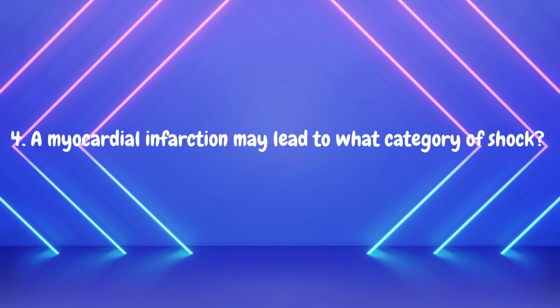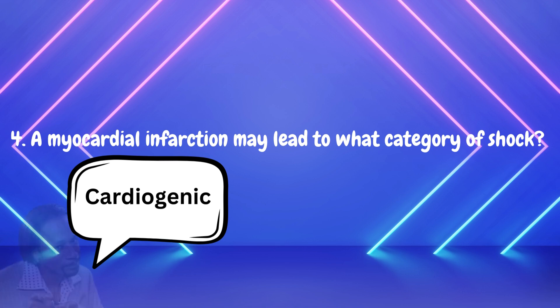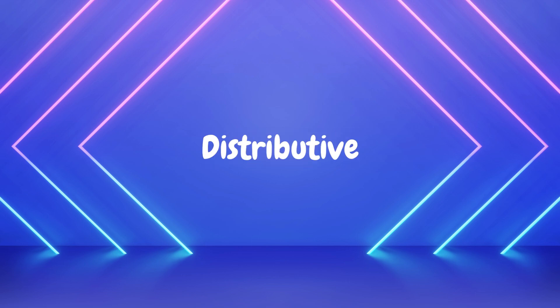Number four: a mild myocardial infarction may lead to what category of shock? Cardiogenic. Anaphylaxis causes widespread vasodilation — let's review the four categories: blood is hypovolemic, pump is cardiogenic, blood vessels is distributive, and obstructive is everything else. Anaphylaxis causes widespread vasodilation, so it falls into distributive shock.